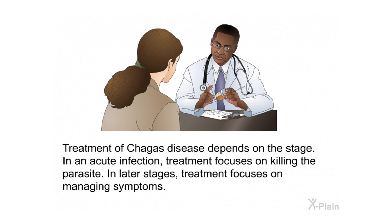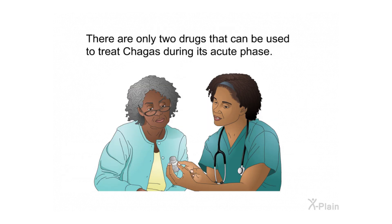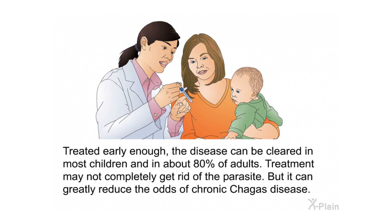Treatment of Chagas disease depends on the stage. In an acute infection, treatment focuses on killing the parasite. In later stages, treatment focuses on managing symptoms. There are only two drugs that can be used to treat Chagas during its acute phase. Treated early enough, the disease can be cleared in most children and in about 80 percent of adults. Treatment may not completely get rid of the parasite, but it can greatly reduce the odds of chronic Chagas disease.